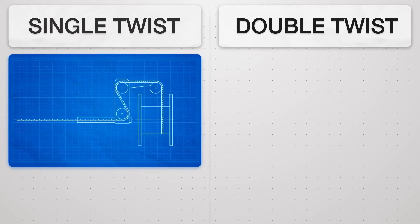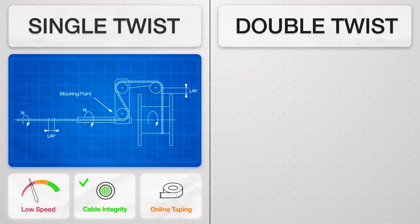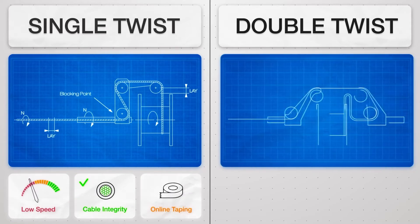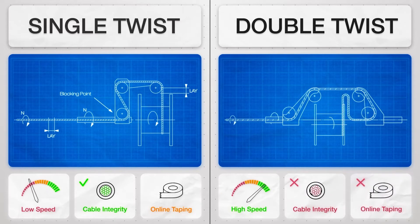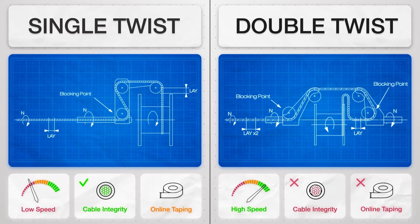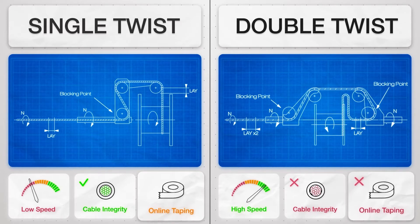The single twist features high stranding quality when bunching copper wires or cabling insulated conductors. The double twist technique provides higher production rate with two-step stranding per flyer revolution. These techniques show either limited operating speed or compromised cable geometric integrity and ability for online taping.